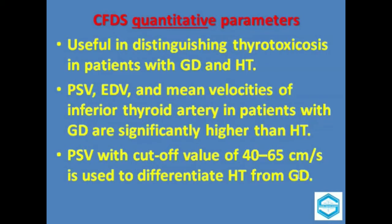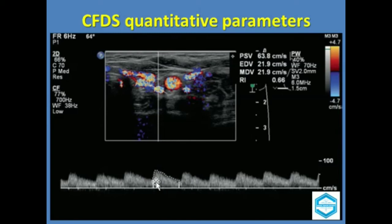To conclude: peak systolic velocity in the range of 150 plus or minus one standard deviation is indicative of Graves' disease, while peak systolic velocities within the range of 50 plus or minus one to two standard deviations are indicative of Hashimoto's thyroiditis. In this image, the quantitative parameters — especially the peak systolic velocity — show 63.8 cm/s, while the end diastolic value is 21.9 cm/s, which falls in the range signifying Hashimoto's thyroiditis.